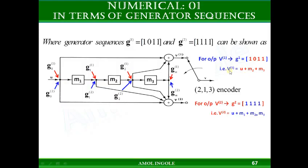You can also write the output equations V1 and V2 using the generator sequence. The first bit corresponds to the current message bit U. Since M1 is not considered — shown as 0 — you do not include M1 in the equation. So V1 is obtained by XORing the current message bit, the bit in M2, and the bit in M3. Output V2 is obtained by XORing the current message bit, the bit in M1, the bit in M2, and the bit in M3.